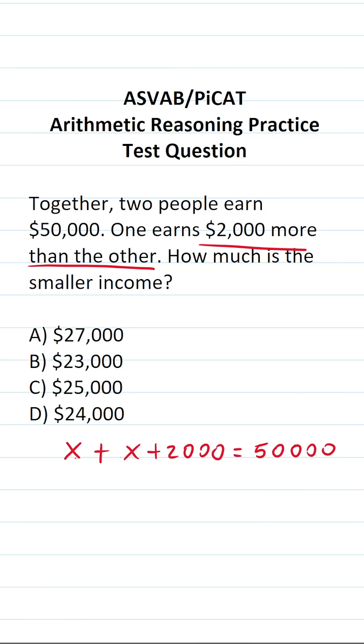So clearly we need to solve this equation for X. X plus X is going to be 2X. So this becomes 2X plus 2,000 equals 50,000.